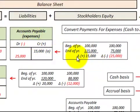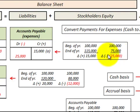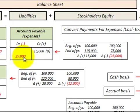Looking at accounts payable: in the case where we had a $15,000 increase for the year — beginning balance $100,000, ending balance $115,000 — we would credit or increase our accounts payable by $15,000. In the case where we had a $25,000 reduction, the beginning balance was $100,000 and the ending balance $75,000, so we'd debit or reduce our accounts payable by $25,000.